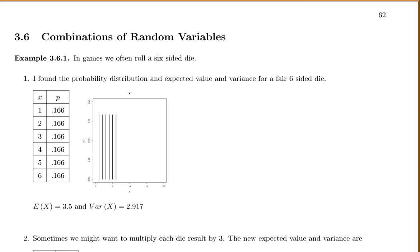In this section, we'll talk about combinations of random variables. We often want to add two variables or maybe multiply a variable by 10 or something like that.